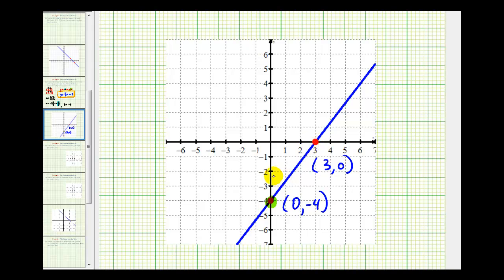So from this point, we'd have to go up four units and right three units. So this verifies the vertical change is positive four and the horizontal change is positive three. Verifying our slope is equal to four thirds. So this does verify graphically that the equation of the line would be y equals four thirds x minus four.